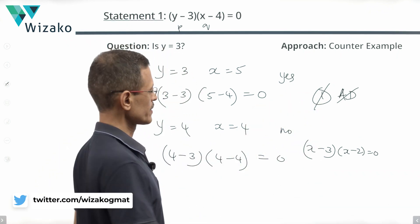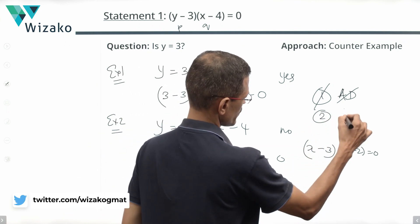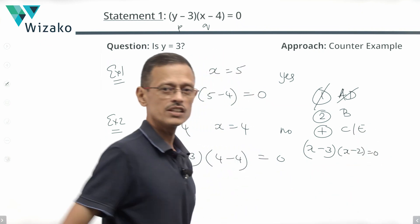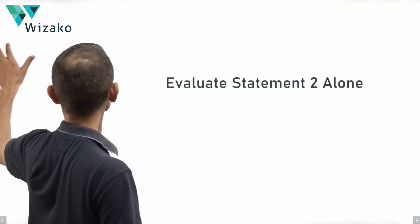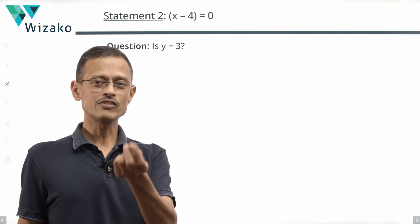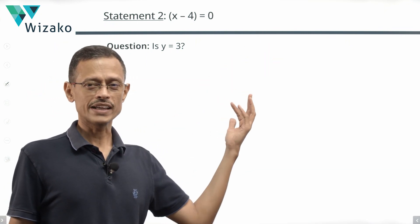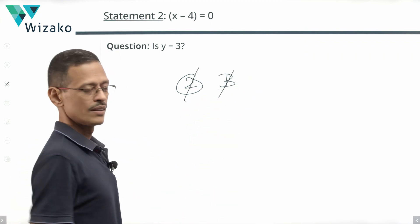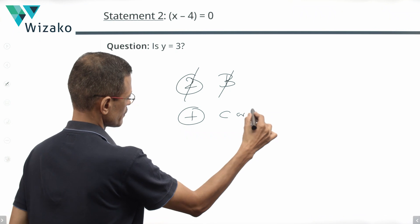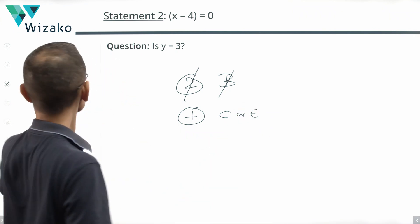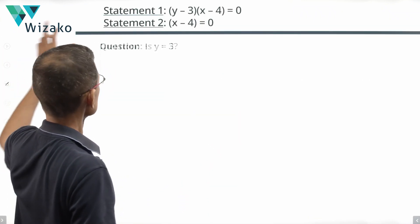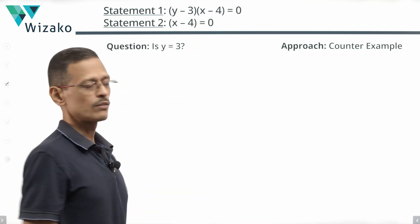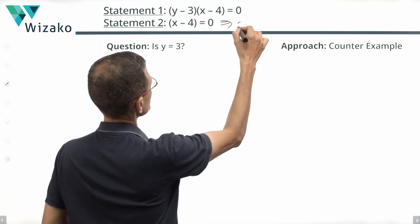That leaves three possibilities. Evaluate Statement 2. If Statement 2 is sufficient, the answer is B. If not, we combine and determine whether it is C or E. Statement 2 is a very easy statement to eliminate — we want information about y, but Statement 2 gives information only about x, specifically x − 4 = 0, meaning x = 4. Absolutely irrelevant to the value of y. So rule out answer option B.